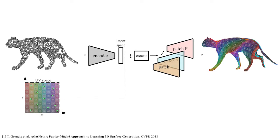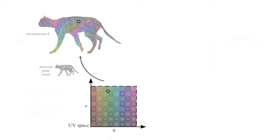We use the AtlasNet framework to define correspondences between the surfaces, and require that each point in UV space is mapped to semantically consistent locations in the reconstruction. We achieve that in an unsupervised manner, by requiring that the surface deforms close to isometrically during the sequence.